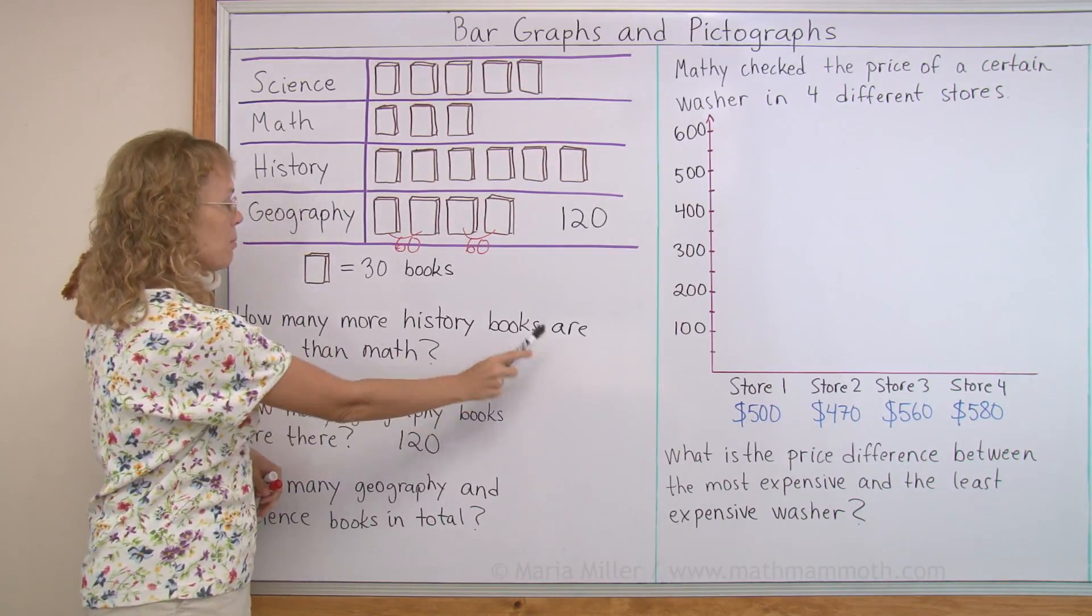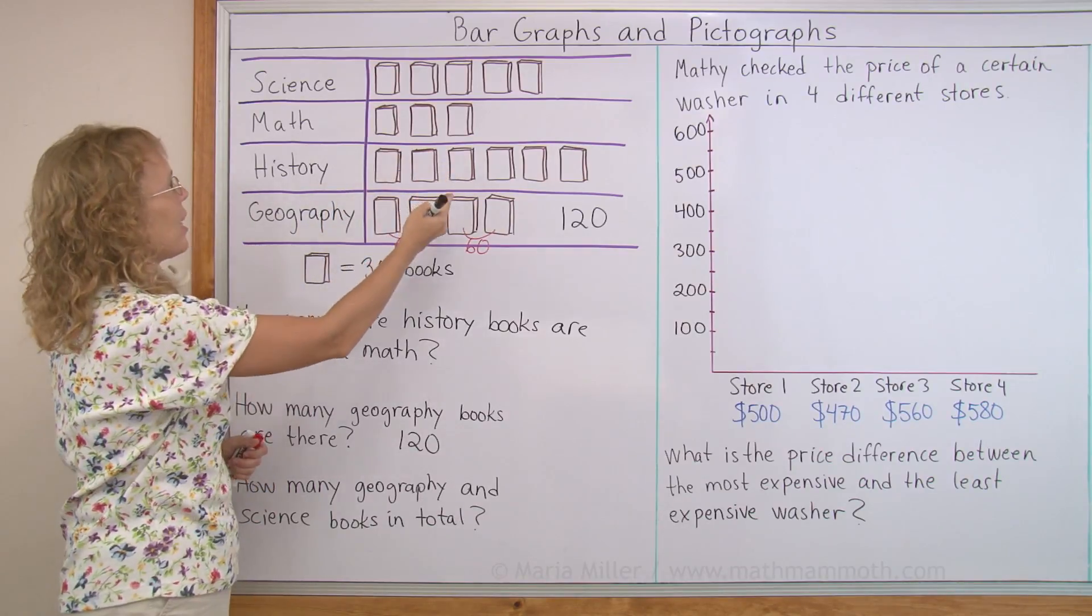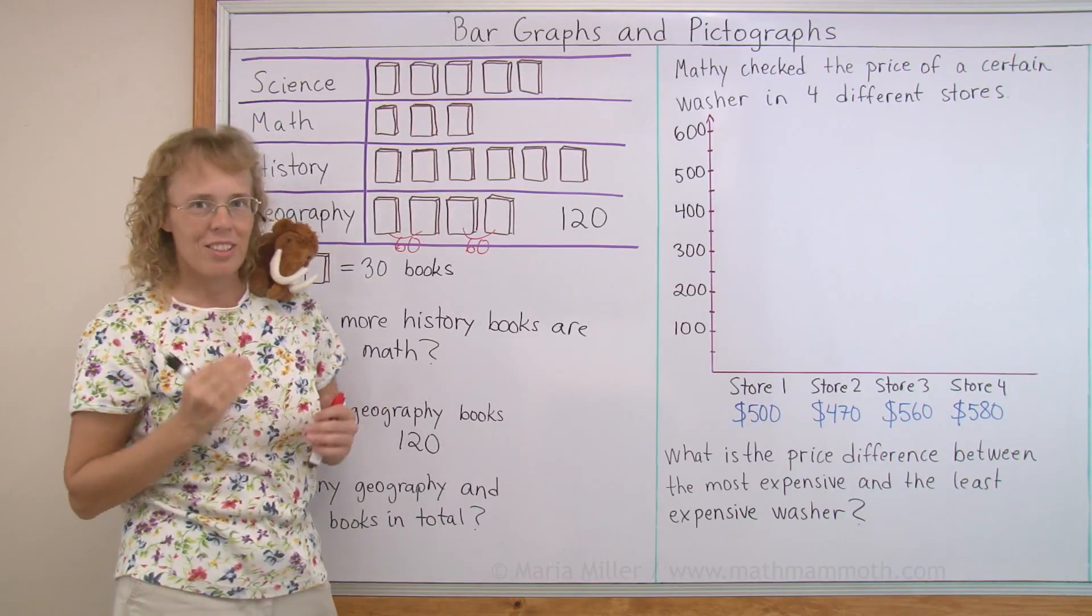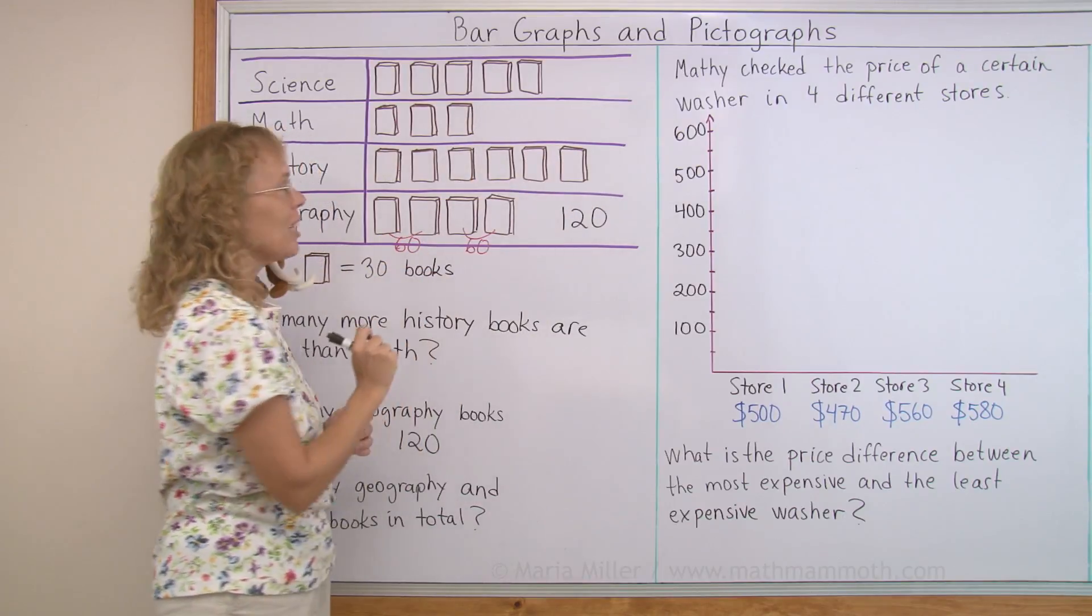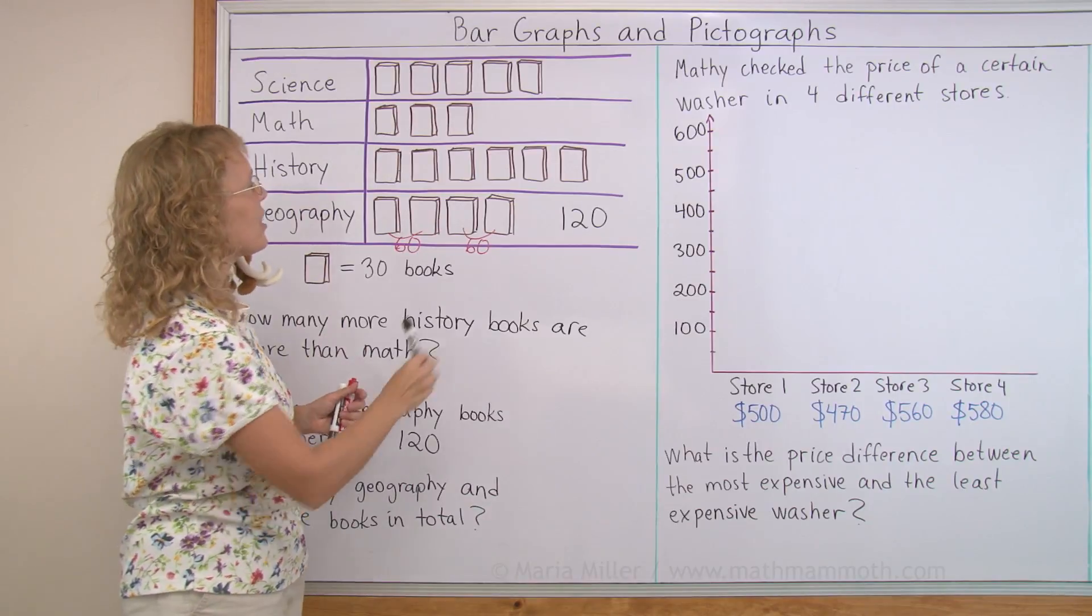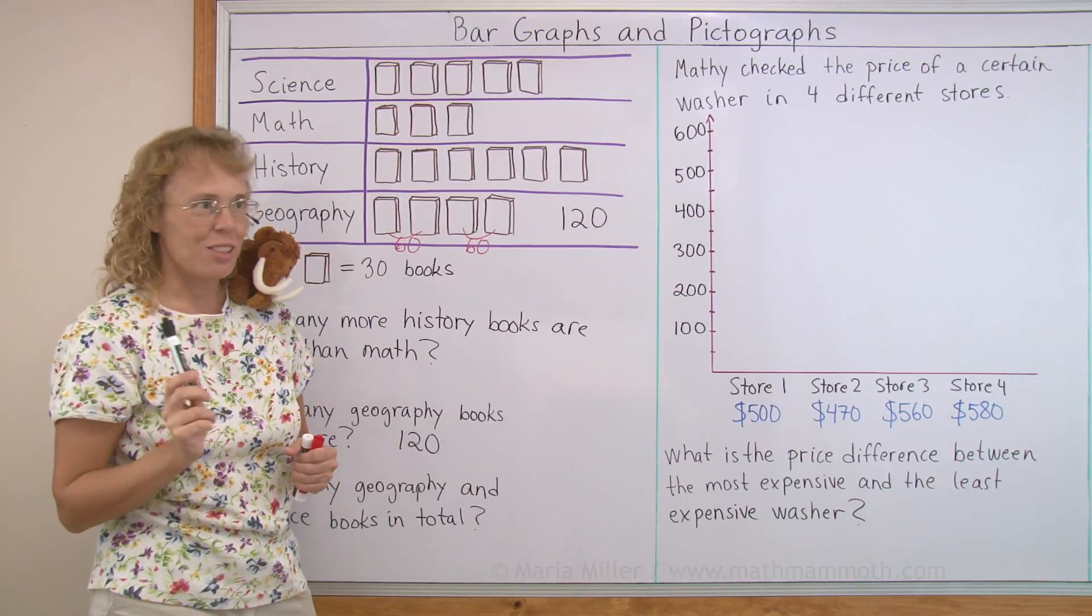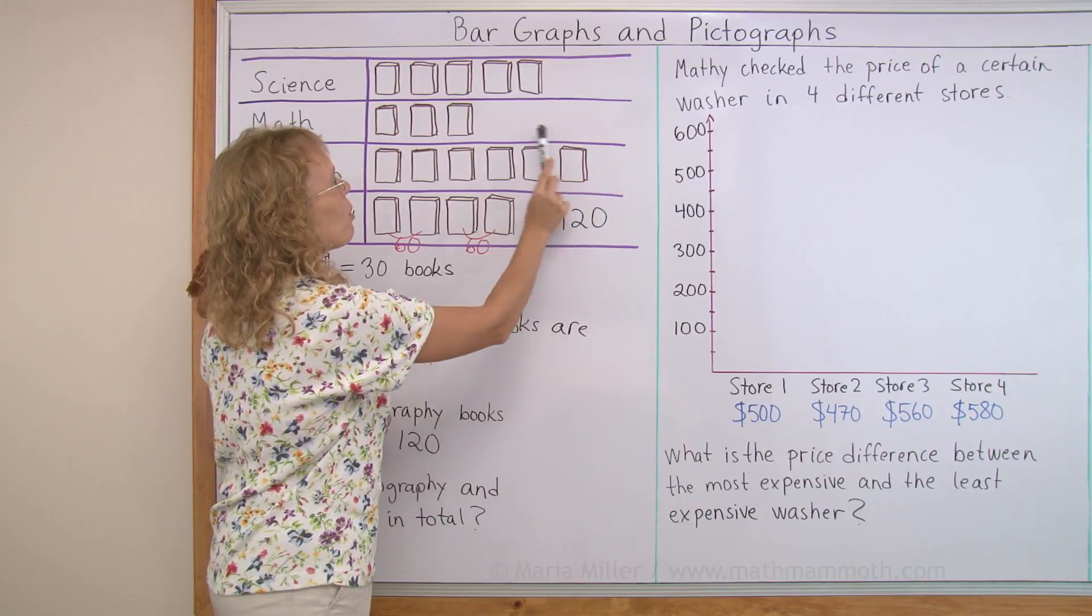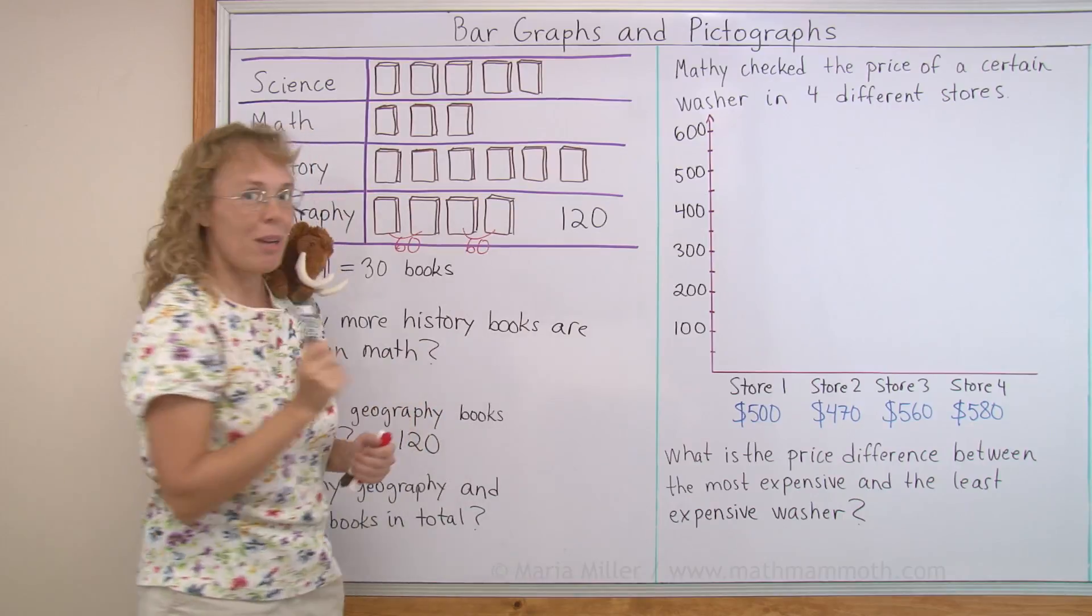How many more history books are there than math books? In a pictograph, I don't actually have to find how many math books and how many history books. How many more symbols are there for the history books than for math books? It is these three. That's how many more books there are for history than math. So that's my answer.